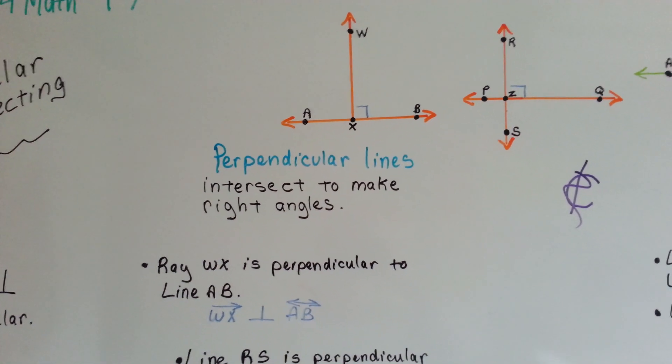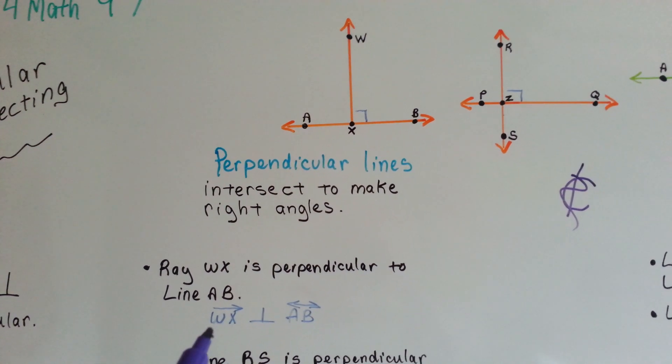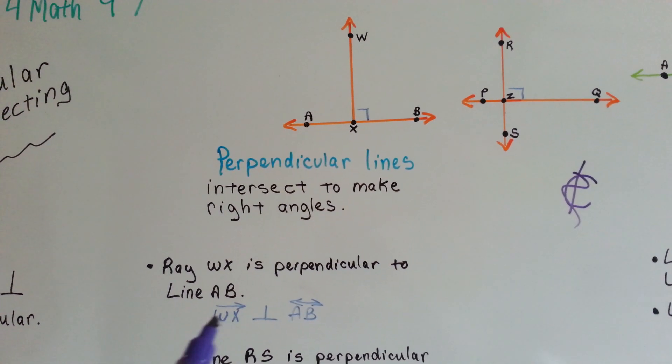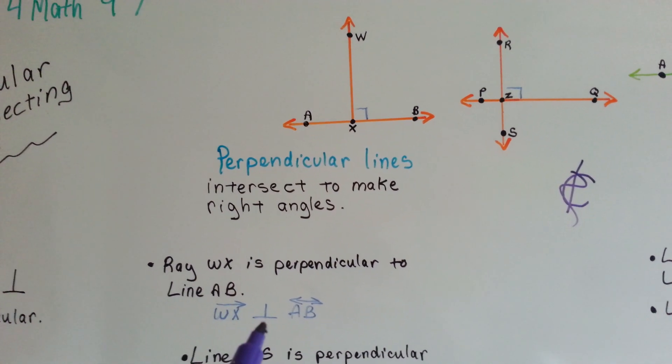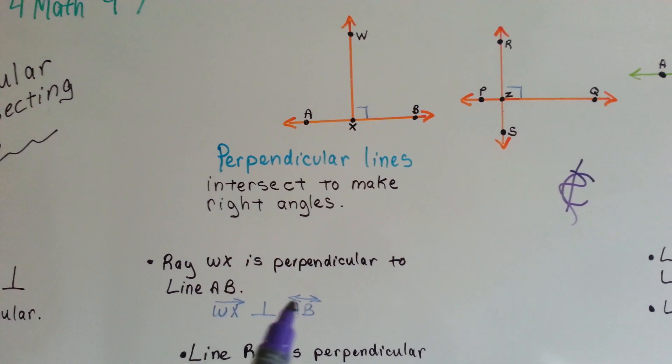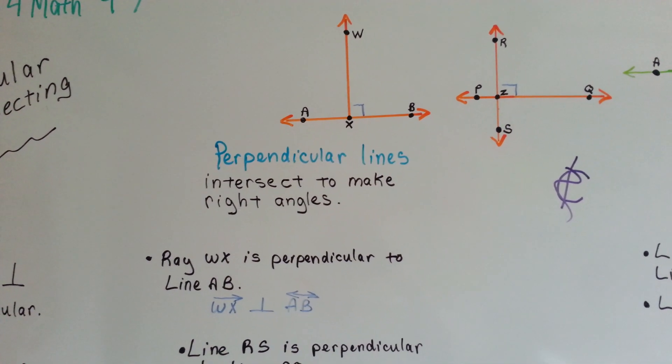And it would be written as, like this down here, WX with a one-way arrow to mean ray, with a perpendicular sign, and then AB with the double-arrowed line to mean line AB.